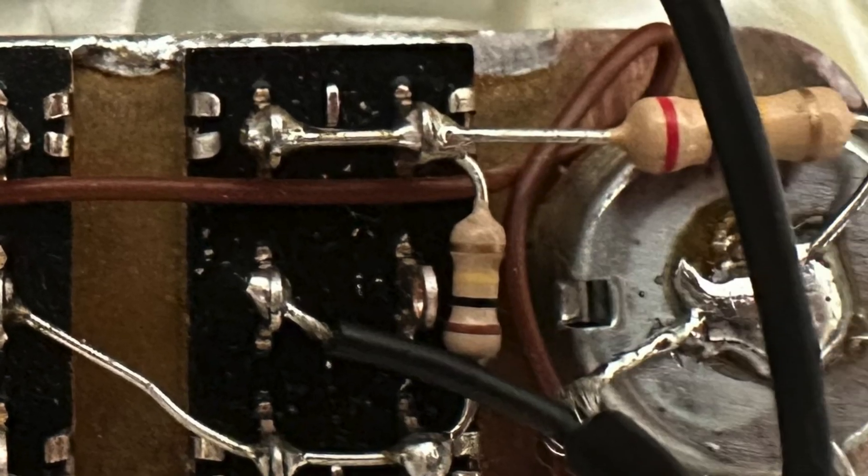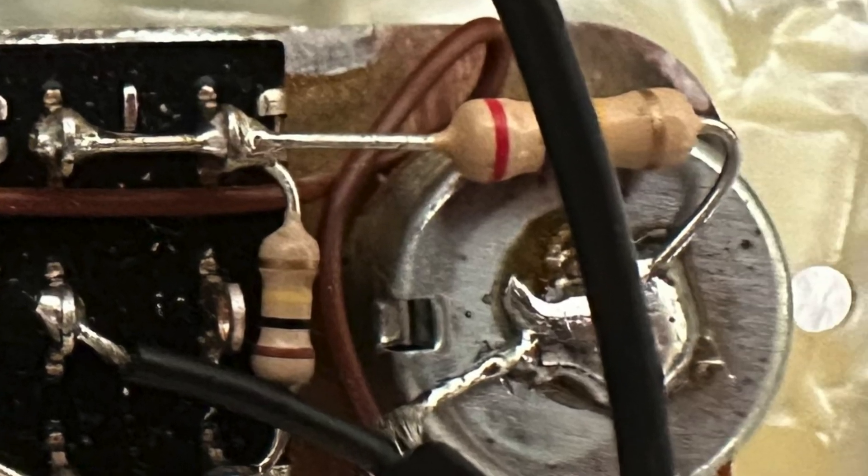Next, resistors. I believe resistors work by cutting down the strength of whatever signal is running through them. Both volume knobs are potentiometers, commonly called pots, are variable resistors that cut back or allow the pickup signals and therefore change the volume.